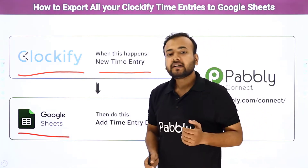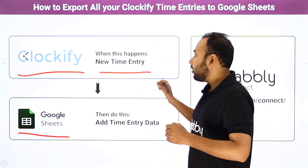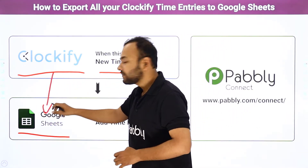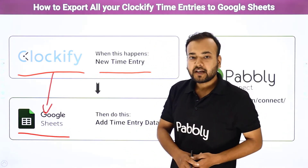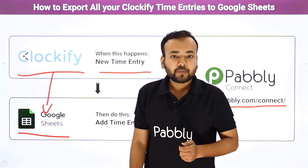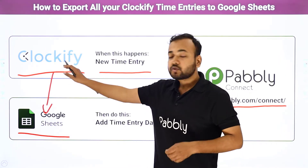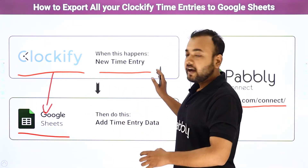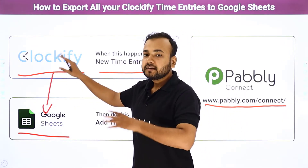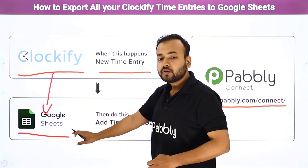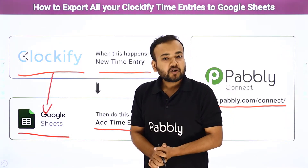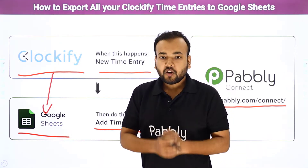By the process I am going to explain in this video, you can automatically transfer the data of new time entries from Clockify to Google Sheets in a new row. To make this happen, I am using a software called Pabbly Connect. It is an automation and integration software that will connect these two applications together. The best part is that you will not require any coding skills or programming knowledge.